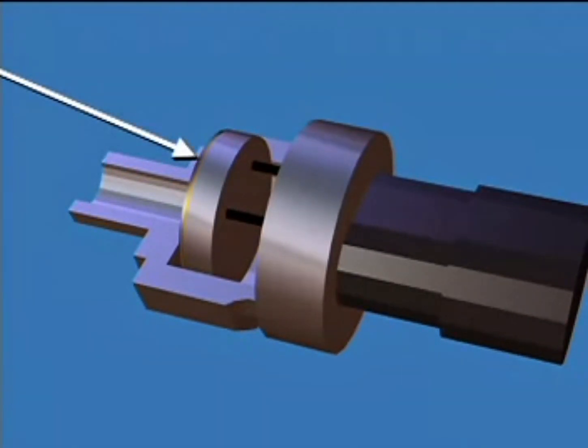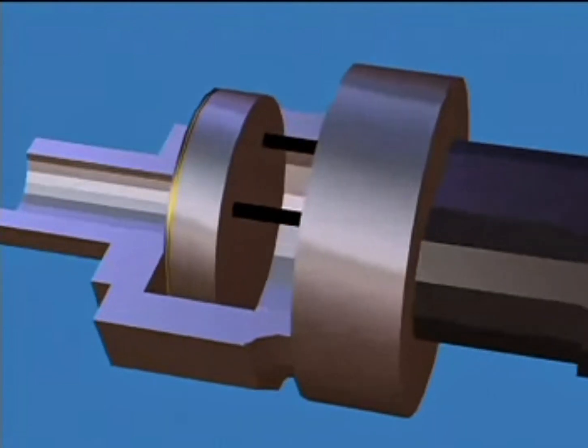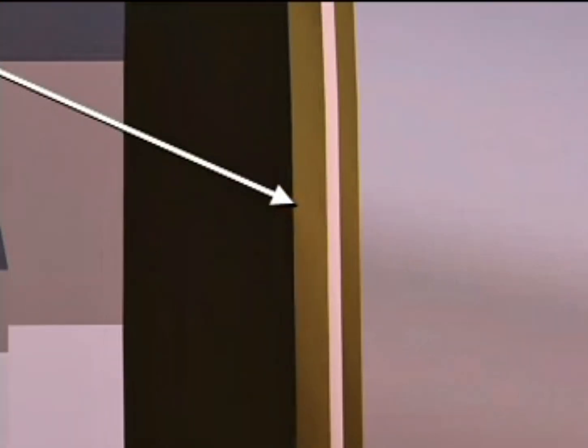Some pressure sensors work by capacitance. The pressure sensor contains a disc that has the pressure to be measured on one side and the reference pressure on the other side. Pressure acting on the disc causes it to move toward or away from a second metallic disc. As the gap changes, the capacitance also changes.